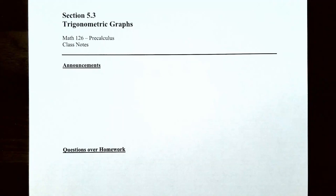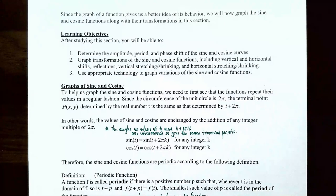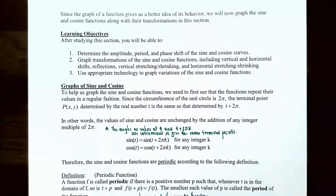Hi everyone, it's Jessica Blompton. In this video we're going to talk about trig graphs. Since the graph of a function gives us a better idea of its behavior, we're going to graph the sine and the cosine functions along with their transformations — including amplitude, period, phase shift, vertical and horizontal shifts, reflections, vertical stretching and shrinking, and horizontal stretching and shrinking.